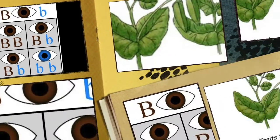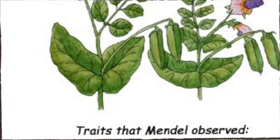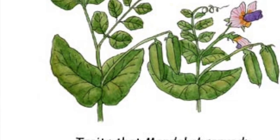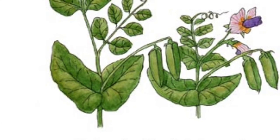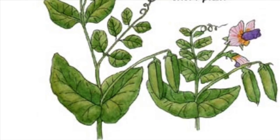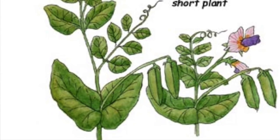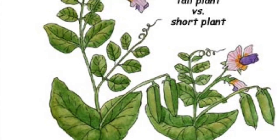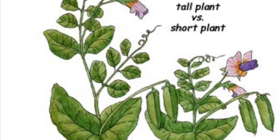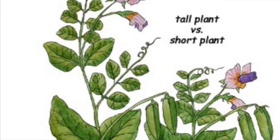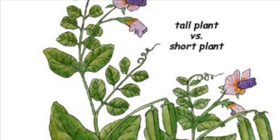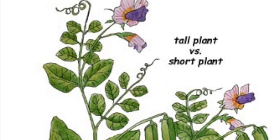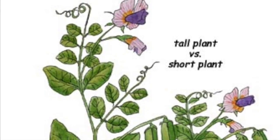Each parent only donates one allele for each gene to an offspring. For example, for the height gene in pea plants there are two possible factors — these factors are alleles. There is a dominant allele for tallness, denoted with a capital letter, and a recessive allele for shortness, shown with a lowercase letter.